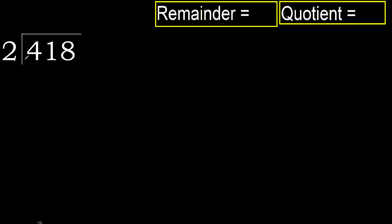418 divided by 2. 4 is not less, therefore with 4. 2 multiplied by which number is nearest to 4 but not greater?